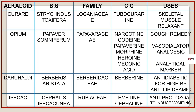The next drug is Daruhaldi. Its biological source is Berberis aristata, belonging to the family Berberidaceae. The chemical constituent is berberine. Its main uses are: it is used as an anti-diabetic, for hypertension, and as an anti-lipidemic agent.